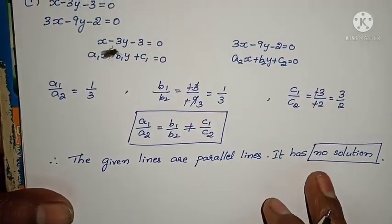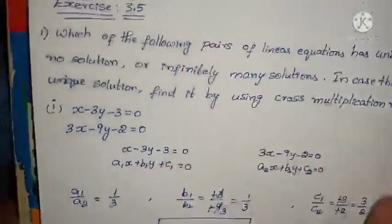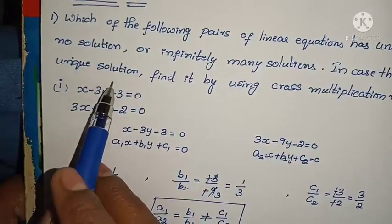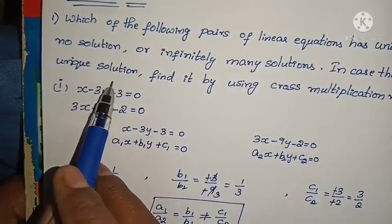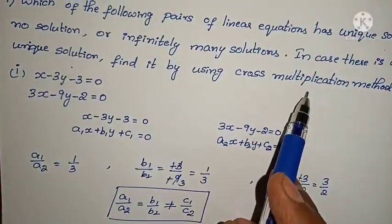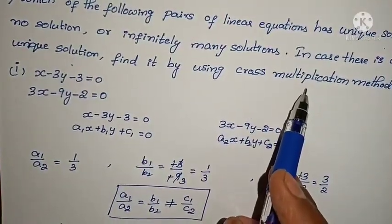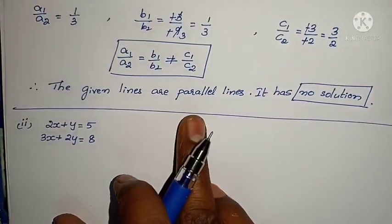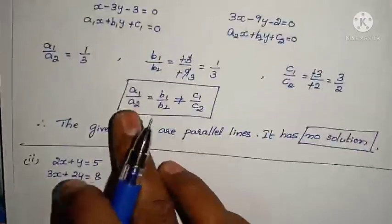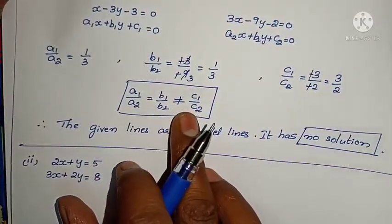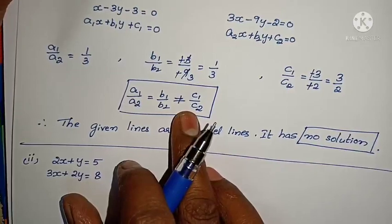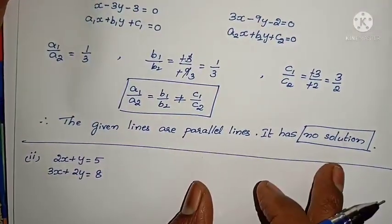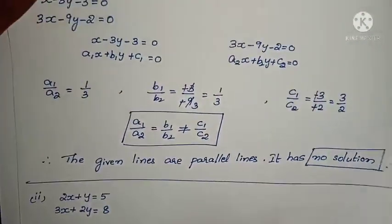That's all. No solution means we must not find anything further. If it is a unique solution, then we have to find the result by using cross multiplication method. If one ratio is equal and one is not equal, then the given lines are parallel lines and it has no solution.